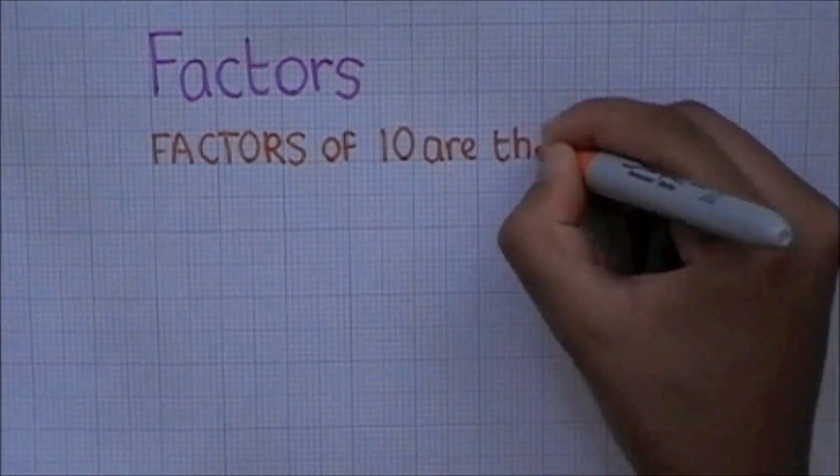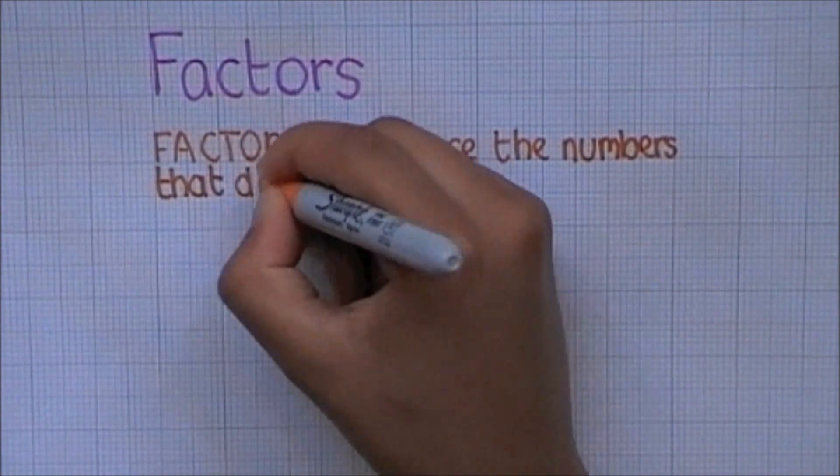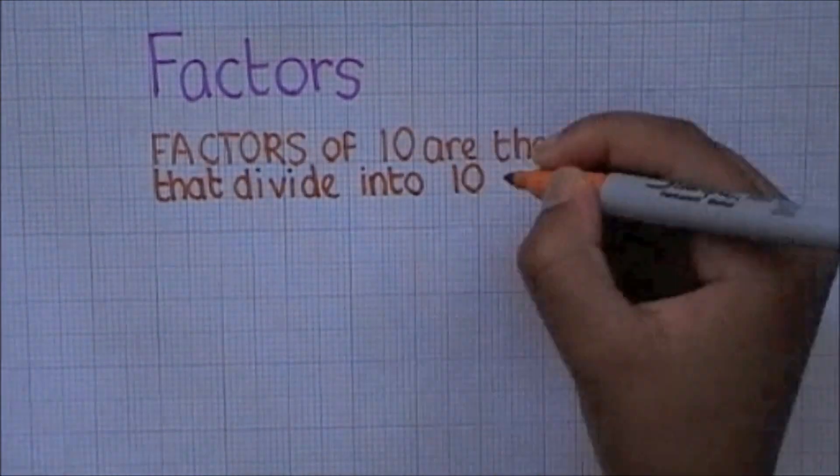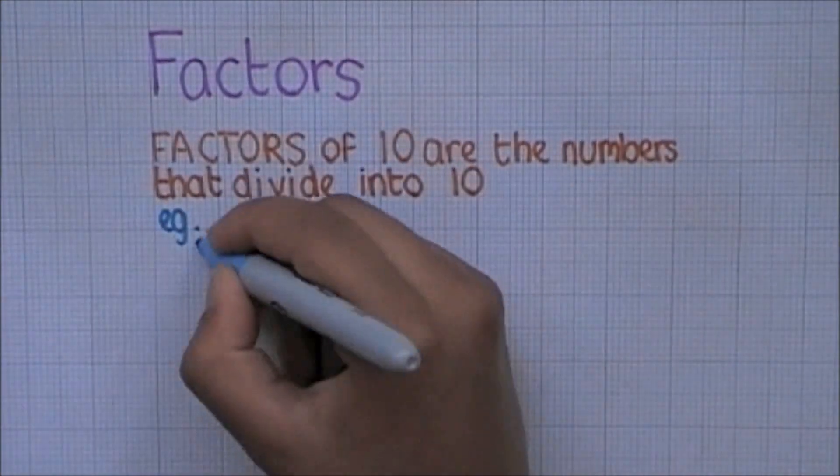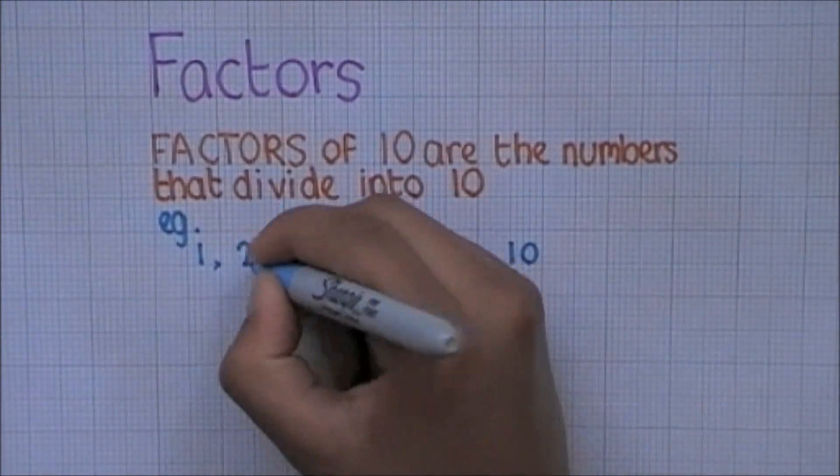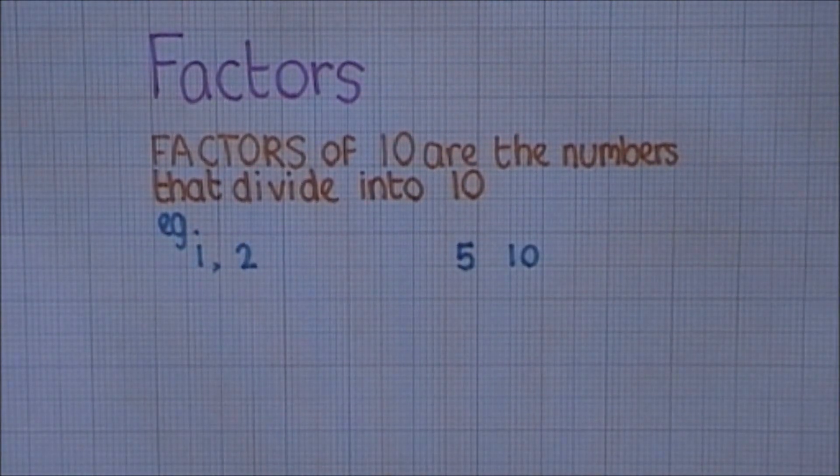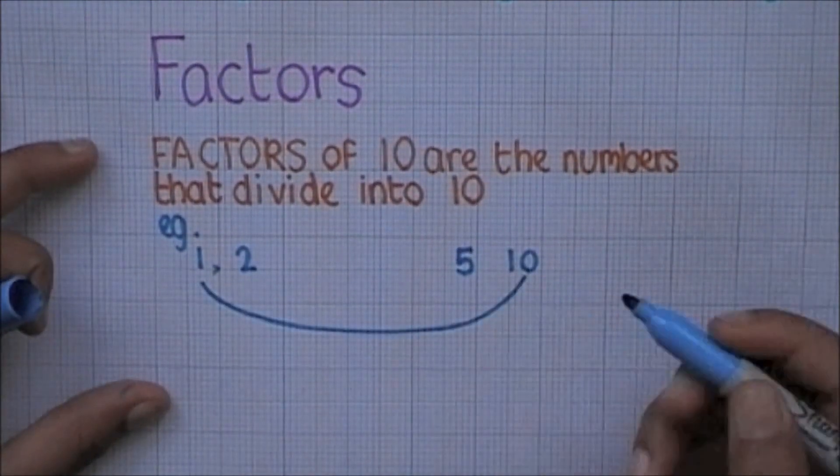Factors. The factors of 10 are the numbers that can divide into 10. So for example, 1 and 10 and 2 and 5. 1 and 10 multiply to get 10 and so do 2 and 5. This is why these numbers are the factors of 10.